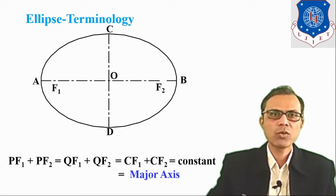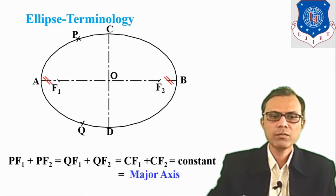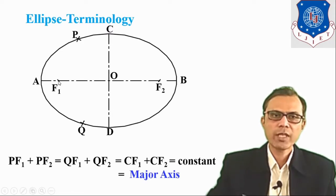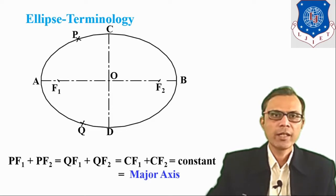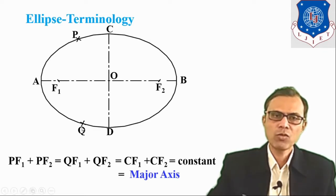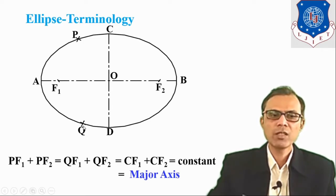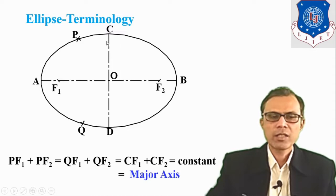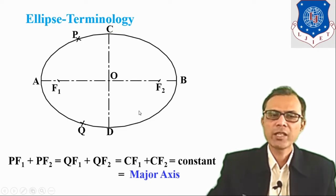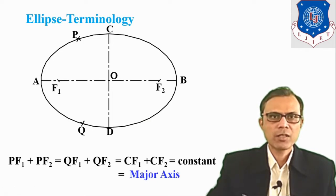F1 and F2 are the two focus points for the given ellipse. On this ellipse, let us consider two points P and Q. The relation is: the distance of P from focus F1 plus the distance of P from focus F2 — that is, PF1 plus PF2 — is equal to the major axis. Similarly, C-point is also on the ellipse, so CF1 plus CF2 would also be equal to the major axis. That is the relation which is required to remember.